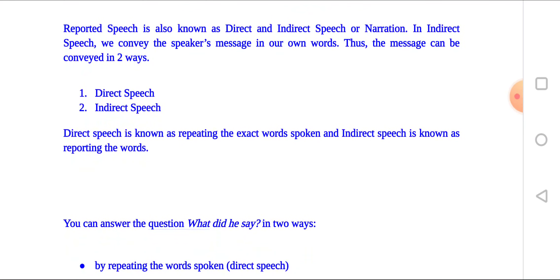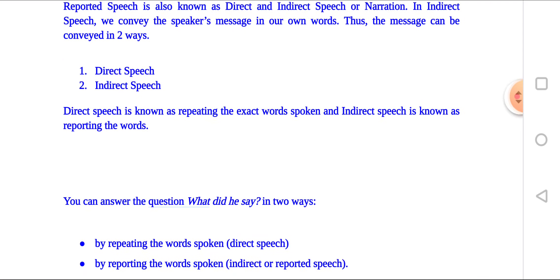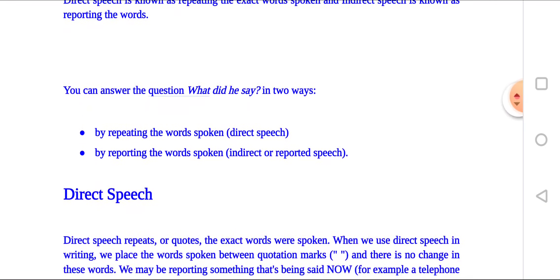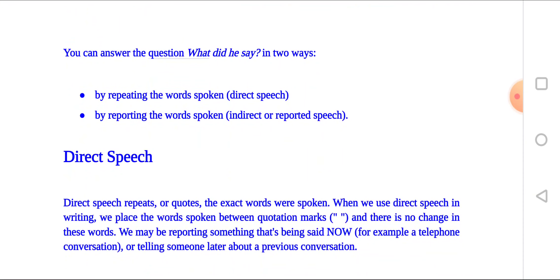Direct speech is reporting the exact words spoken. You can answer the question 'What did he say?' in two ways: by repeating the exact words spoken — that is direct speech — or by reporting the words in indirect speech. Direct speech repeats the exact words spoken. When we use direct speech in writing, we place the words spoken between quotation marks and there is no change in these words.